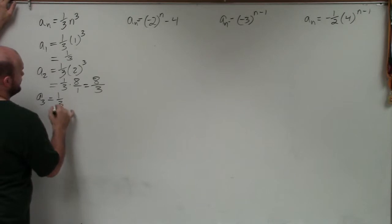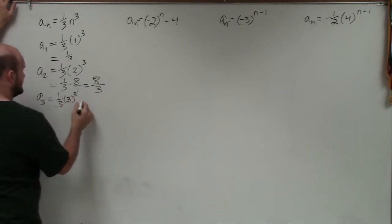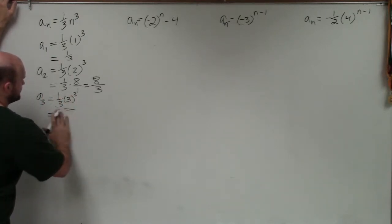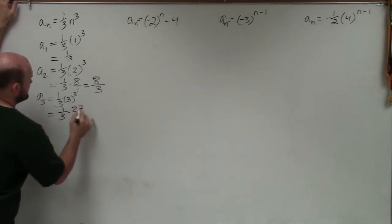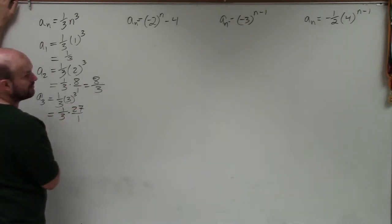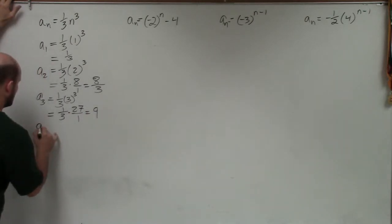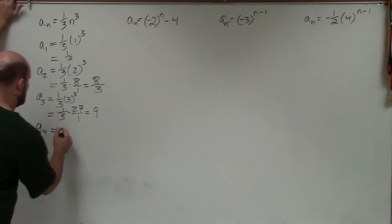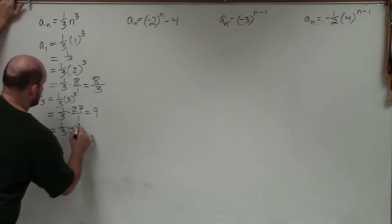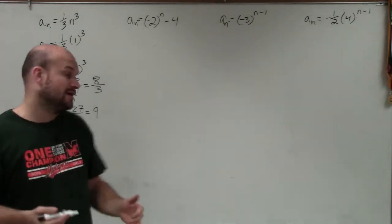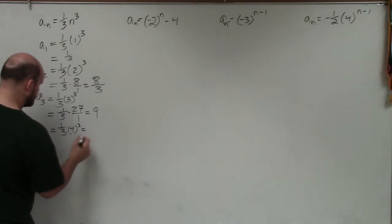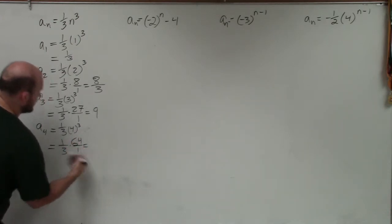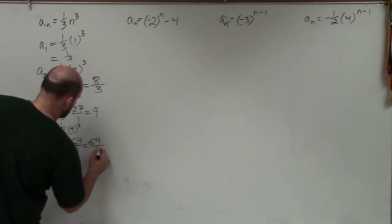For a sub 3, that's going to be 1 third times 3 cubed. 3 cubed is going to be 27. 27 times 1 third — multiply across — gives you a non-fractional answer of 9. For a sub 4, that's 1 third times 4 cubed. 4 cubed is 4 times 4 times 4, which is 64. So that equals 1 third times 64 over 1. You cannot divide 3 into 64, so that's going to remain 64 thirds.